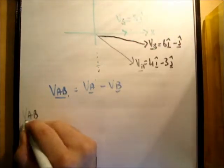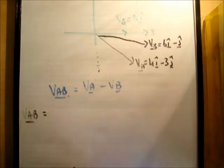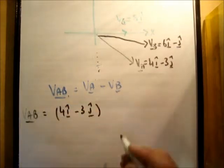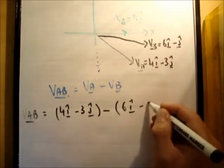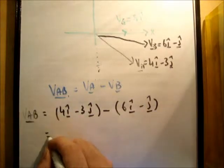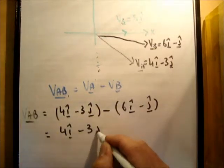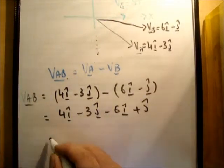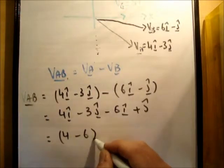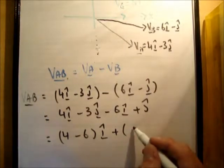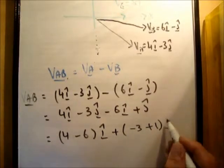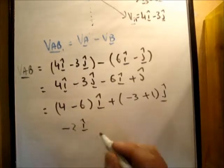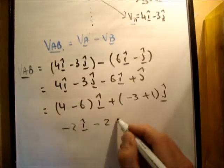So we have VAB is equal to, so we have 4I hat minus 3J hat. Be careful with your brackets, 6I hat minus J hat. That's equal to 4I hat minus 3J hat minus 6I hat plus J hat. You can add, of course, anything provided it's in the same direction. So you get the following here. And you get minus 3 plus 1 here. And you're going to get negative 2I hat, negative 2J hat.